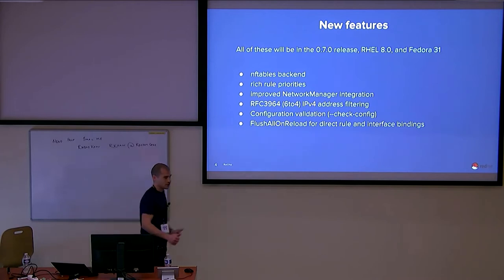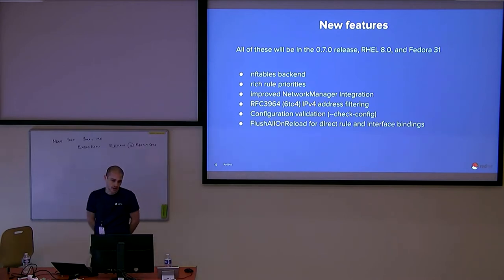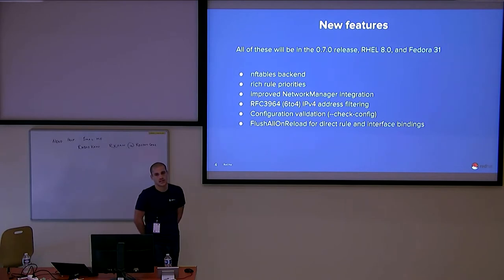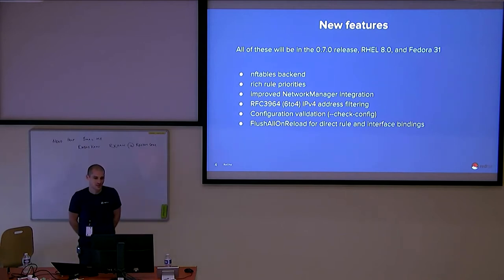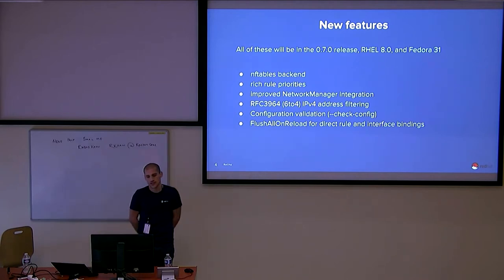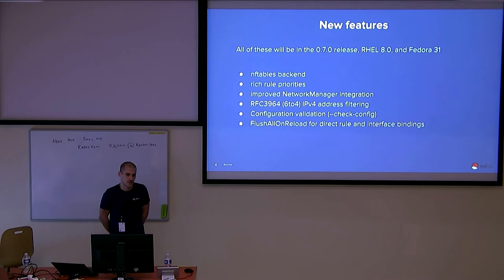The main reason we're here is to talk about features. These are probably the more notable things added in the last 18 months. All of these will be in 0.7, which will be released someday, and they'll also be in RHEL 8 and Fedora 31. The first two are very large features with their own slides, so I'll only briefly mention them right now: NFTables backend and rich rule priorities.